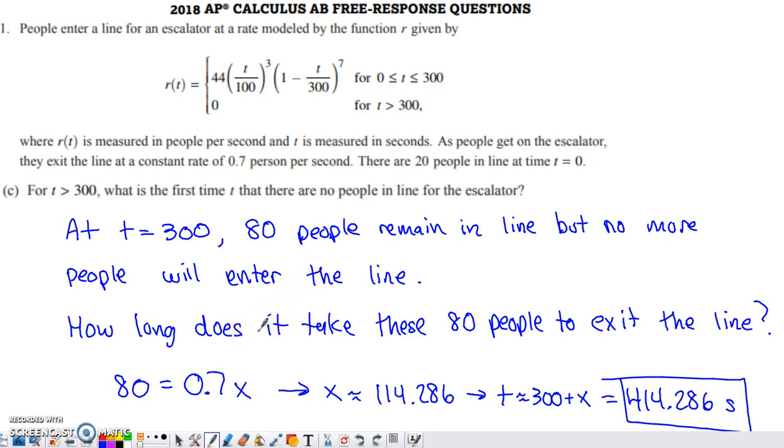Since no one else is entering the line, we just have to figure out how long it's going to take those 80 people to get onto the escalator and exit the line. If we set 80 equal to 0.7 times X seconds, you can divide both sides by 0.7. What you end up with for X is 114.286, and that is measured in seconds.